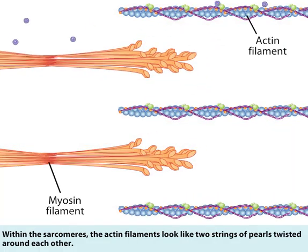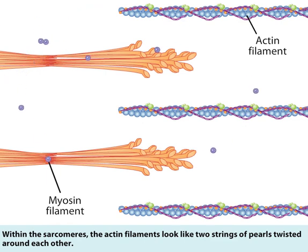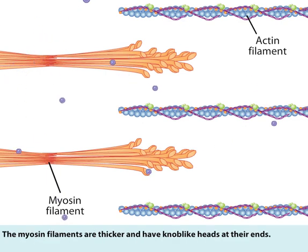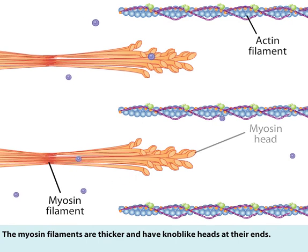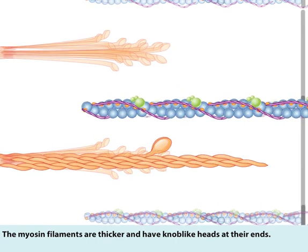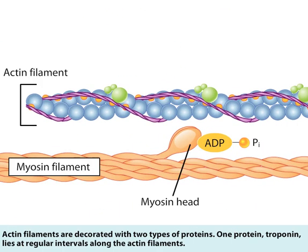Within the sarcomeres, the actin filaments look like two strings of pearls twisted around each other. The myosin filaments are thicker and have knob-like heads at their ends. Actin filaments are decorated with two types of proteins. One protein, troponin, lies at regular intervals along the actin filaments.